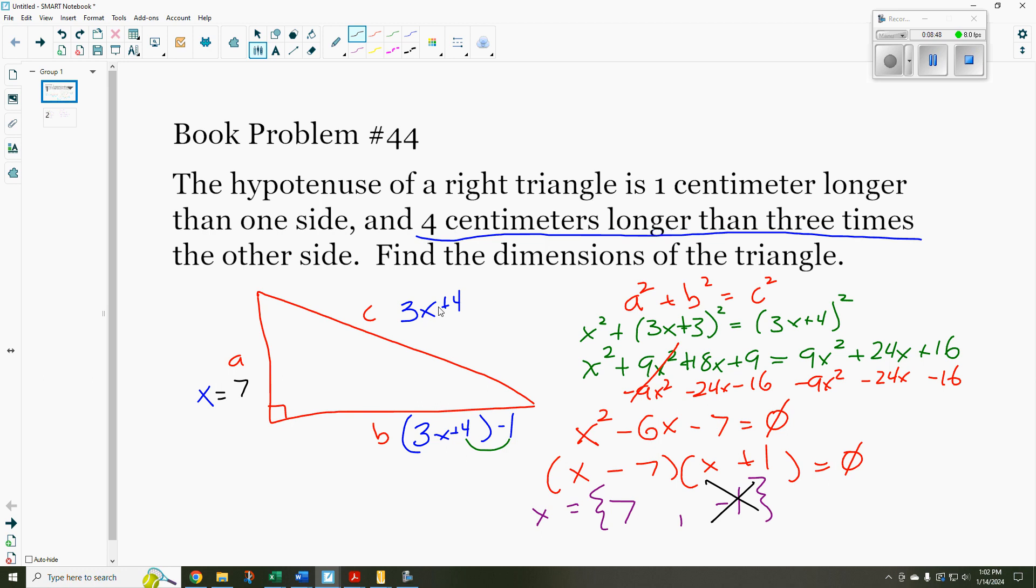And that means that 3x plus 4, the hypotenuse, is going to be 3 times 7 plus 4. That's 21 plus 4. That is 25. And 3x plus 4 minus 1. Well, that's going to be 24. So the dimensions of my triangle are 7, 25, and 24.